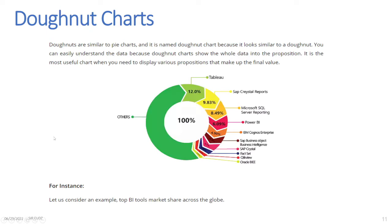Donut Chart: Donut charts are similar to pie charts and are named so because they look similar to a donut. You can easily understand the data because donut charts show the whole data in proportions. It is the most useful chart when you need to display various proportions that make up the final value. For instance, one example shows the top BI tools market share across the globe.